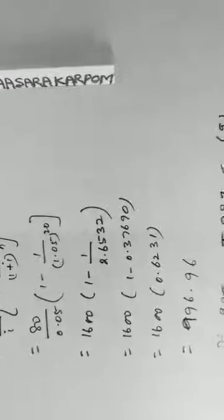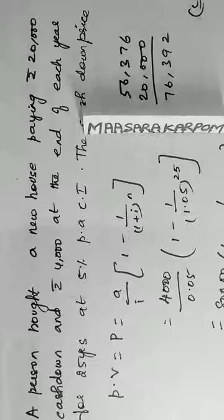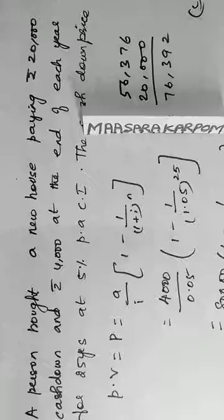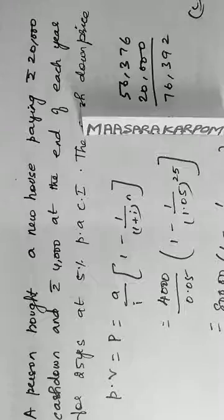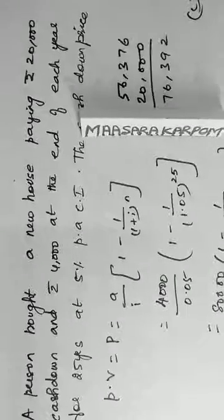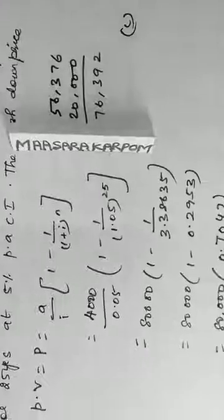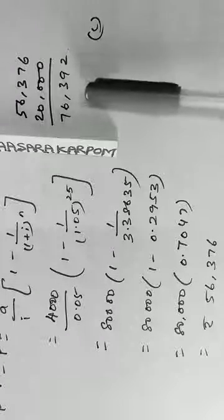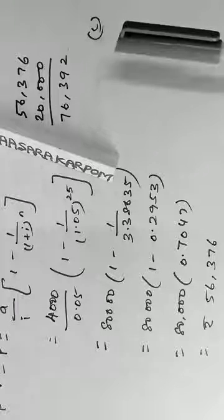A person bought a new house paying Rs 20,000, then 4,000 each year for 25 years at 5% interest. So we will use present value formula. Substitute, you will get present value is equal to 56,376. Add this to the first amount, add 20,000 to get 76,392. That's the right option.